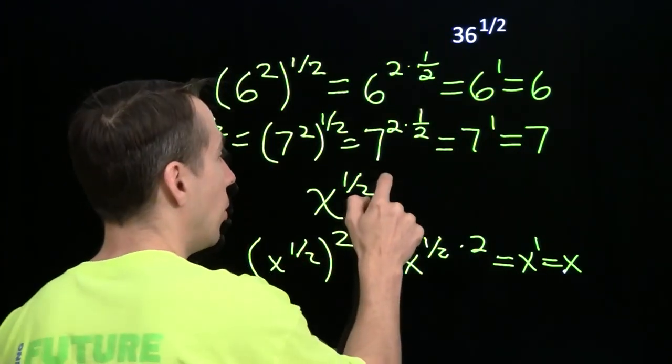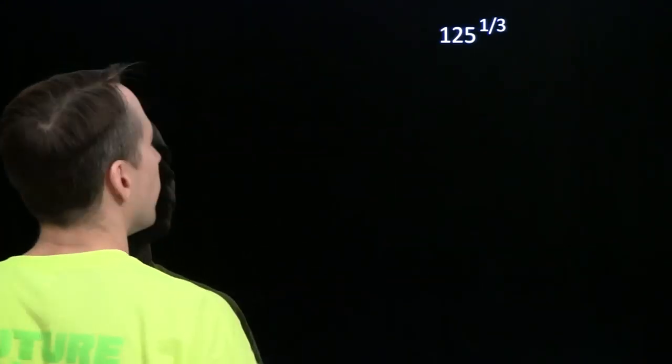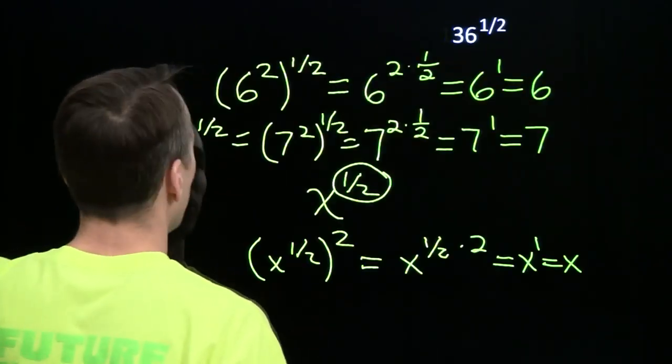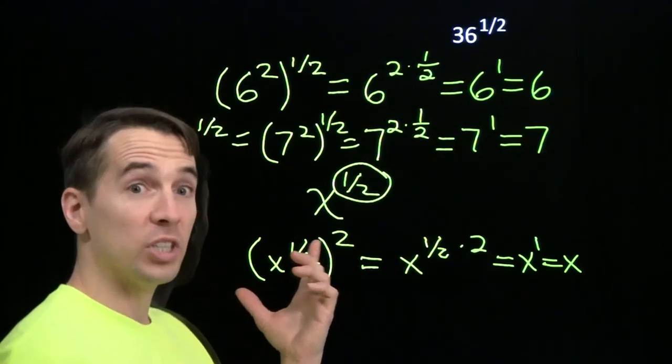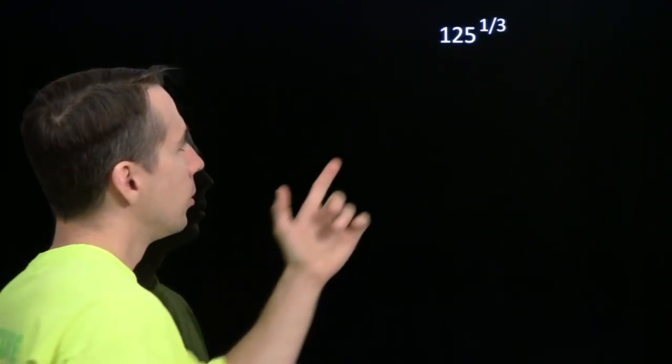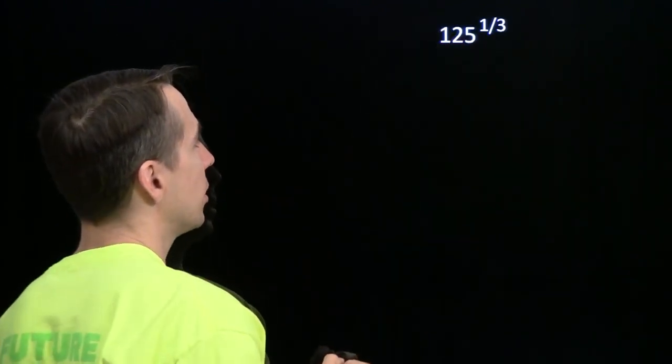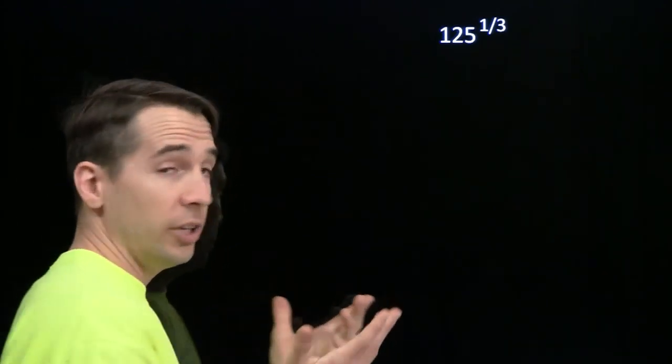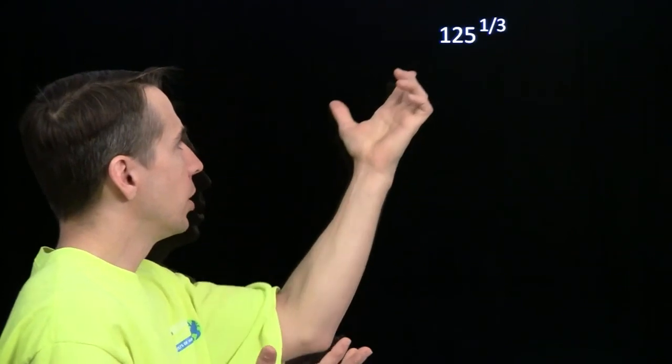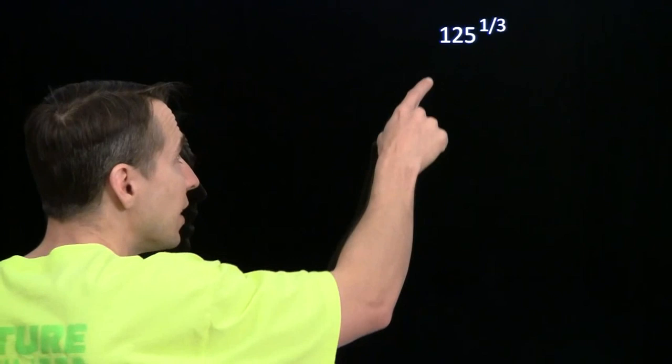Now, of course, 1 half is not the only fraction we can stick in an exponent. What about 1 third? Now, back here, we define x to the 1 half as the number that we square in order to get x back. Maybe something to the 1 third is the number we cube to get the 125 here. Well, let's see if that works out with our exponent rules. 125, what number do we cube to get 125? That's 5. So we're going to guess that this is going to come out to be 5. Let's see if that's what happens.